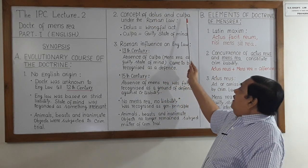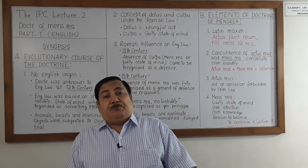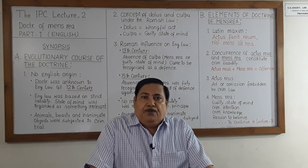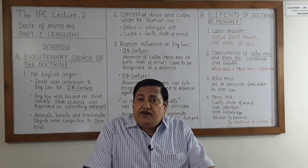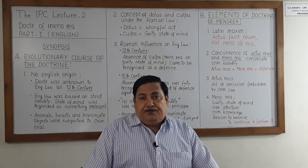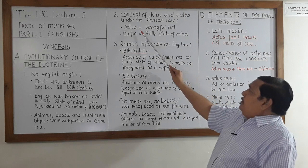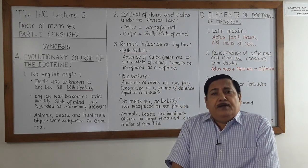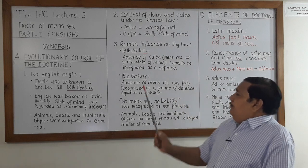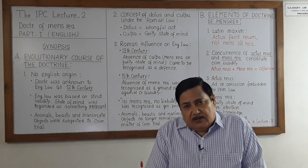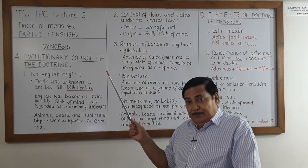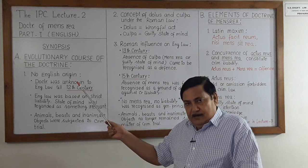The concept of Dolus and Culpa — referable to Roman law — influenced English law. Dolus here means a wrongful act, or an act or omission forbidden by criminal law. Culpa here means mensrea, or guilty state of mind. So the concept of Dolus and Culpa influenced the irrational English law.